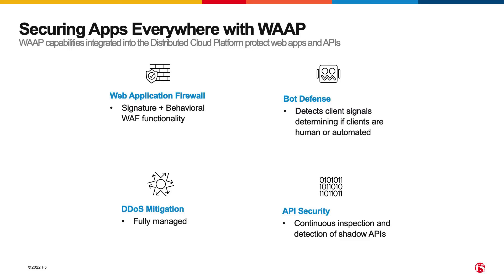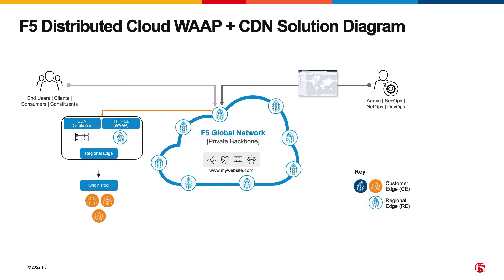If you already have F5's web application and API protection solution, you know very well that it has game-changing security enhancements for distributed cloud environments, including a web application firewall, DDoS protection, bot defense, and API security. By integrating F5 Distributed Cloud CDN with WAP, you can enhance end-user experience by serving static and dynamic content from edge locations without high cost and resources, and do so securely, leveraging the benefits of WAP in protecting your applications.